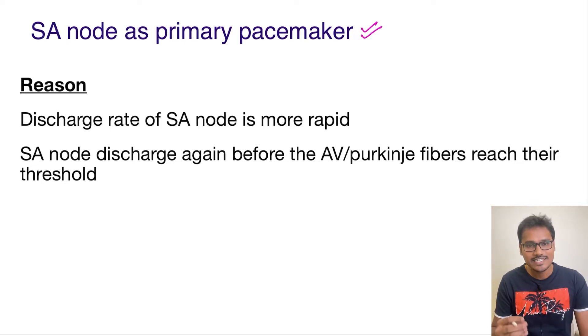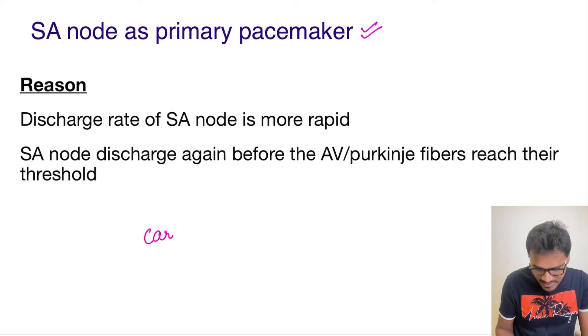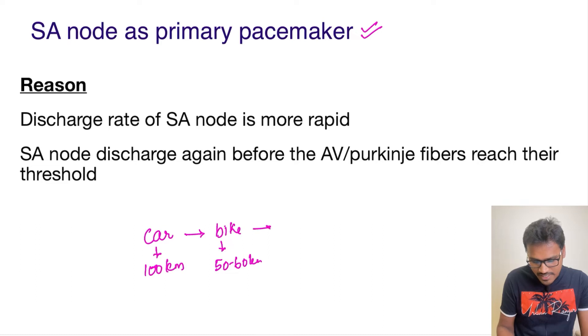For understanding this, let's take a simple concept. Let's take a car which can run at a speed of 100 kilometers per hour, tied to a bike which can run at around 50 to 60 kilometers per hour, which is tied to a cycle which can run at around 20 to 30 kilometers per hour.